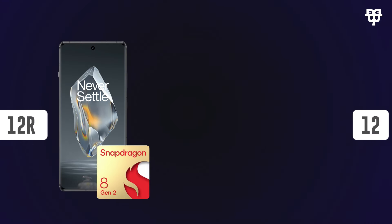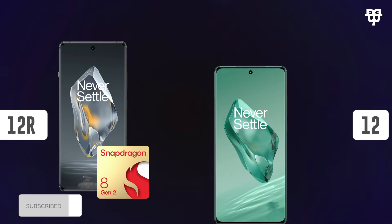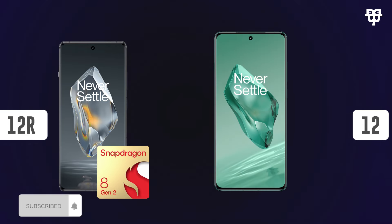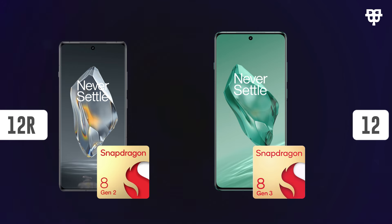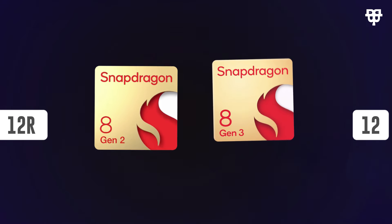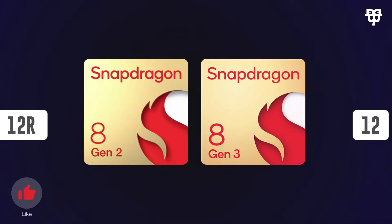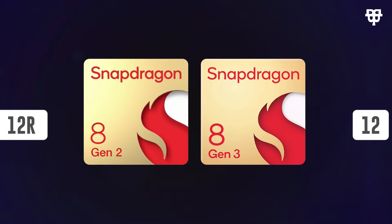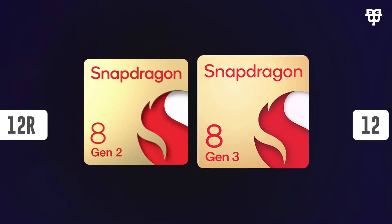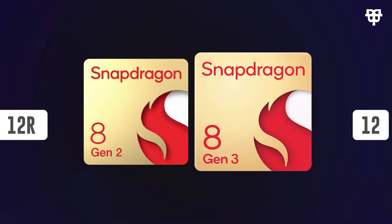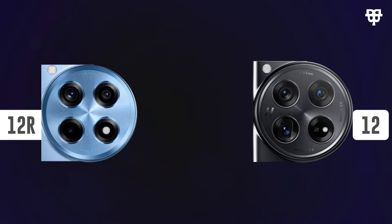Now let's talk about processing power. The OnePlus 12R is equipped with the Snapdragon 8 Gen 2 processor, whereas its more premium sibling, the OnePlus 12, features the Snapdragon 8 Gen 3. While both processors are powerful, the difference in generation can affect overall performance, making the OnePlus 12 a bit more advanced in this department.